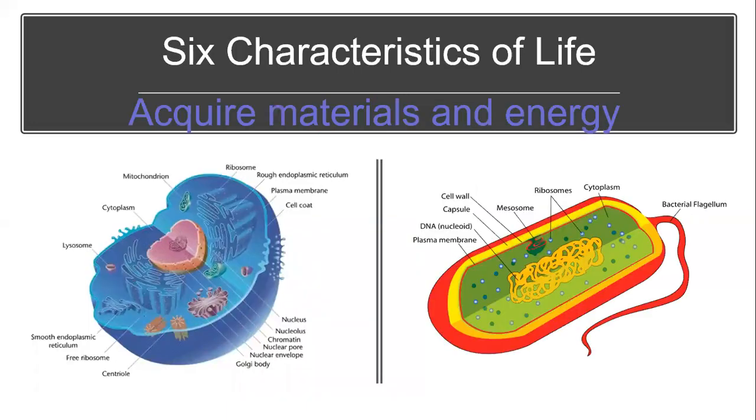Another characteristic of life is that cells need to acquire materials and produce their own energy. The mitochondrion or mitochondria, if there's more than one in a eukaryotic cell, is the powerhouse. This is able to produce energy. Your eukaryotic cells acquire materials through your digestive tract.